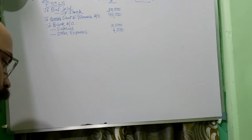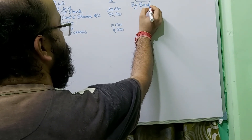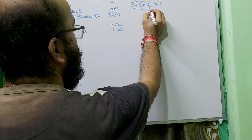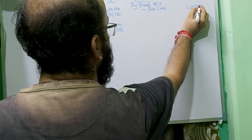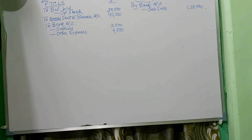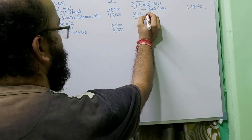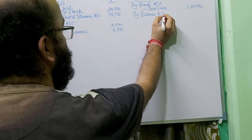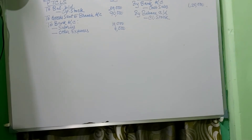On the credit side: sales — by bank account, cash sales — 1,20,000. The closing stock is not known, so it has to be calculated by balancing. We will compute the closing stock using a working note below.